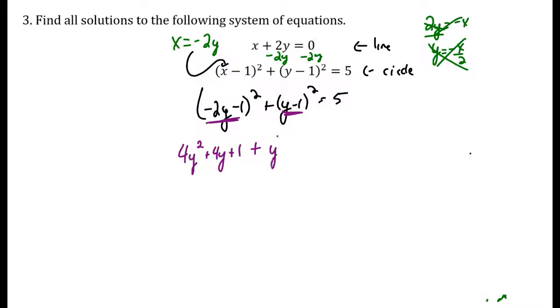You're going to end up with 4y squared plus 4y plus 1, plus, make another table, y squared minus 2y, plus 1 equals 5. Combining like terms here, I have 5y squared plus 2y plus 2 equals 5.